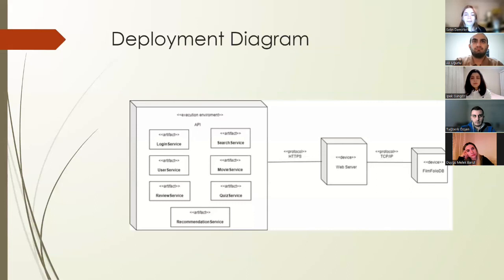And next up, we have deployment diagram and our first execution environment is the API, which stands for Application Programming Interface. This environment hosts several essential services that facilitate communication and interaction within our system. These include login service, search service, user service, review service, movie service, and recommendation service. Login service manages user authentication and login functionality. Search service handles search operations, ensuring users can find relevant information efficiently. User service is responsible for managing user-related operations. Review service oversees functionalities related to user reviews, ensuring user feedback is handled seamlessly. Movie service is dedicated to managing movie-related operations, such as retrieving movie details. Recommendation service provides our users personalized recommendations based on their preferences and activities.